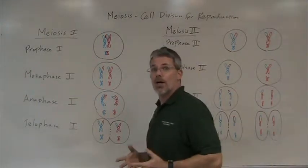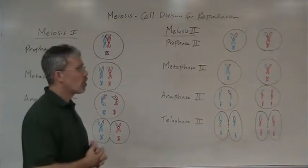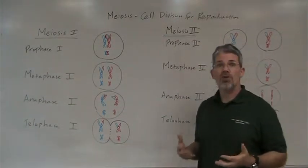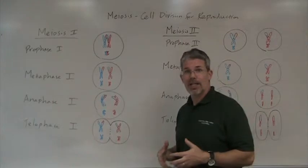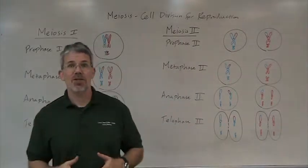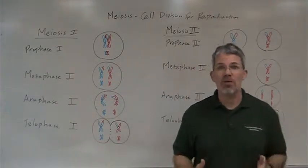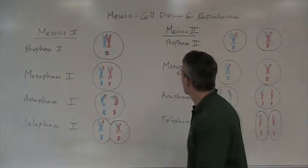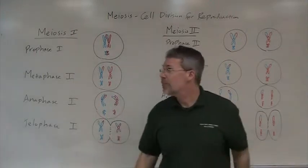The stages of meiosis are summarized on the board right behind me. Now remember, meiosis starts with one diploid parent cell and ends with four haploid daughter cells, and this is achieved in two cell divisions — meiosis I and meiosis II. Meiosis I is shown on this side, meiosis II shown on that side.